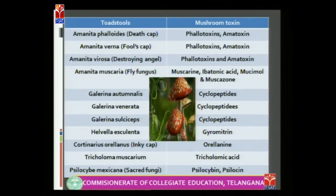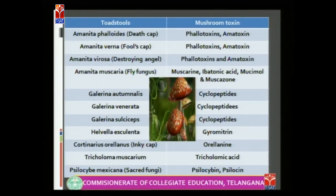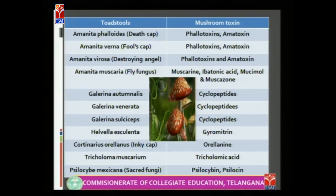Galerina autumnalis, Galerina venenata, and Galerina sulciceps all contain cyclopeptides. Gyromitra esculenta contains gyromitrin. Cortinarius orellanus, commonly known as Ingi cap, contains the toxin orellanine. Tricholoma muscarium contains tricholomic acid, and Psilocybe mexicana, commonly known as cycle fungi, contains psilocin and psilocybin toxins.